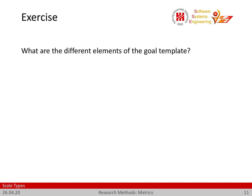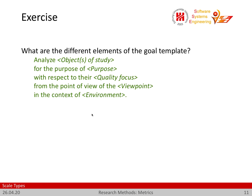Let's have a brief exercise. What are the different elements of the goal template? Try to recapitulate that — pause the video for a moment. Welcome back. Here are the results. We have: analyze the object of study for the purpose of the given purpose, quality focus, viewpoint, and environment. So these five elements — object, purpose, quality focus, viewpoint, environment — held together by the text: analyze the object of study for the purpose of purpose, with respect to their quality focus, from the point of view of the viewpoint, in the context of the environment.